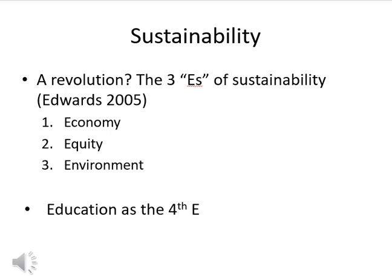Another twist on that is what Edwards calls the three E's. That includes the economy, equity — which really replaces society — and the environment, of course. This looks a lot like those three circles, but the equity aspect shines a light on a particular part of society, and here that means we're building in notions of social justice into sustainability itself. He actually offers a fourth E, which has to do with education, encouraging people to think about sustainability in a broader sense.